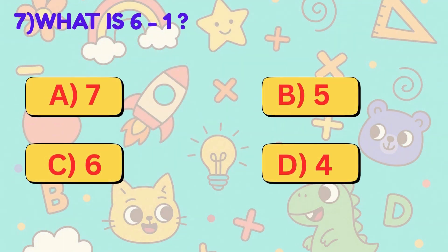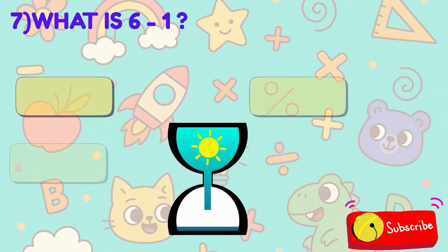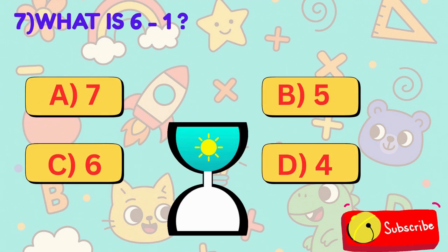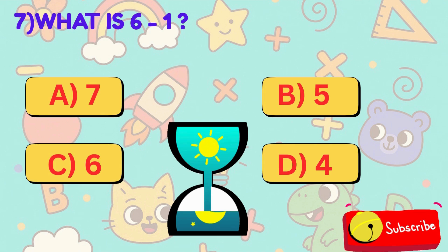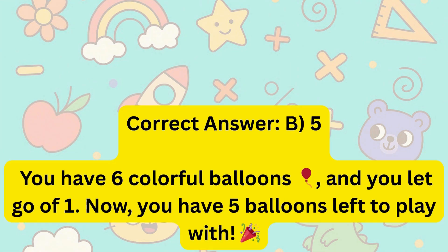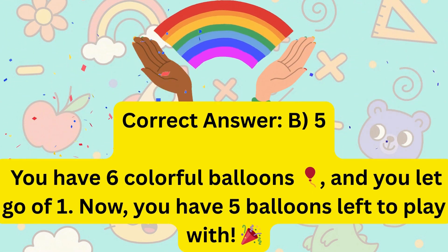7. What is 6 minus 1? Is it A, 7, B, 5, C, 6, or D, 4? Correct answer is B, 5.